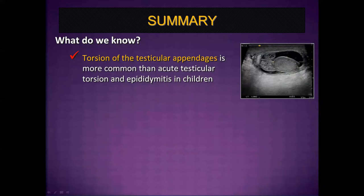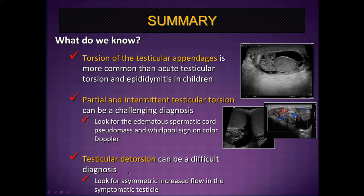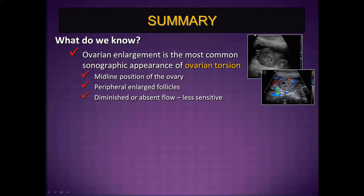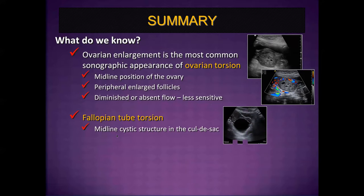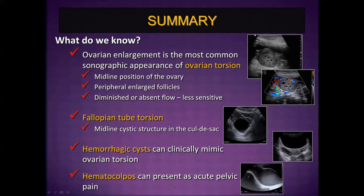In summary: torsion of the testicular appendages is more common than acute testicular torsion and epididymitis in children, so look for it when you do not find acute testicular torsion. For partial and intermittent testicular torsion, look for the edematous spermatic cord pseudomass and whirlpool sign on color Doppler. For detorsion, look for asymmetric increased flow in the symptomatic testicle. For females, ovarian enlargement is the most common sonographic finding of ovarian torsion, with midline positioning, peripheral enlarged follicles, and diminished or absent flow — though flow can be less sensitive. Look for a midline cystic structure in the cul-de-sac for fallopian tube torsion, and remember hematocolpos can present as acute pelvic pain.